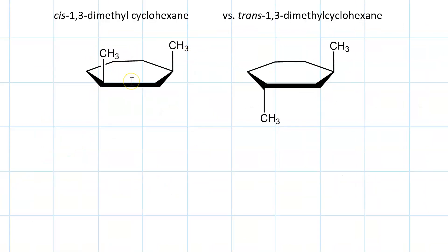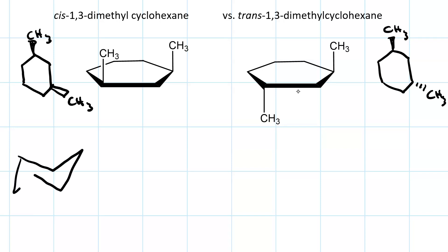Here's the Haworth projection for cis-1,3-dimethyl cyclohexane. And here's the one for trans. You could do some wedge dash structures as well. What about the chairs? There's the cis. It's got one chair with both of those bulky groups axial.